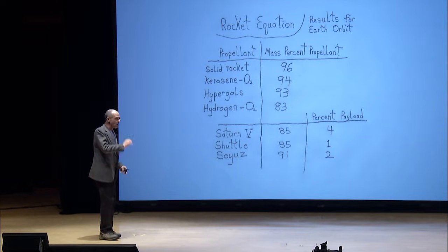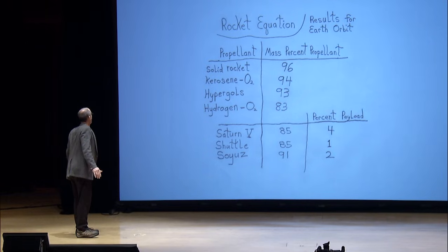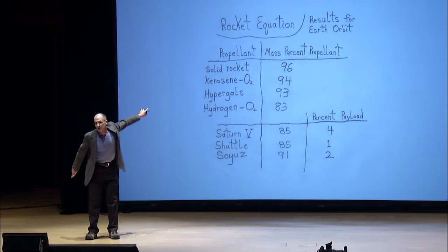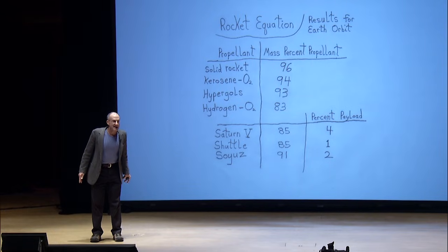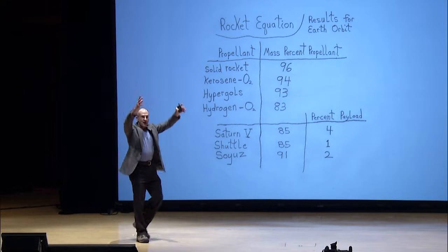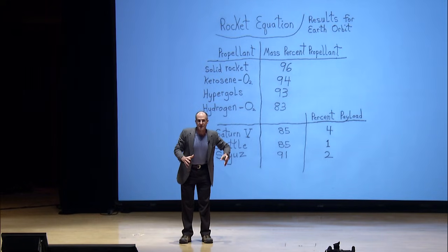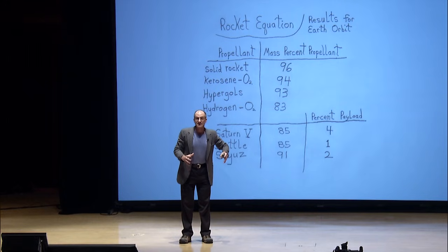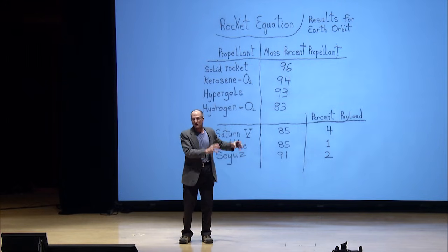Let's go from the surface of Earth into low Earth orbit — eight kilometers per second — choose a variety of rocket propellants, plug them into the rocket equation, and here is the result. Mass percent propellant: they're all around 90%. That means your rocket sitting on a launch pad, 90% of it is propellant, and 10% of it is everything you think of as the rocket. And that's dictated by this tyrannical equation called the rocket equation.